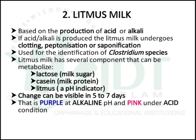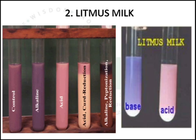The second test is the litmus milk test, based on the production of acid or alkali. If acid or alkali is produced, the litmus milk undergoes clotting, peptonization, or saponification. This method is mainly used for identification of Clostridium species. The litmus milk has components including lactose (a milk sugar), casein (a milk protein), and litmus as a pH indicator. Changes are visible from 5 to 7 days. It produces purple color at alkaline pH and pink color at acidic pH.